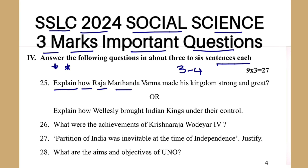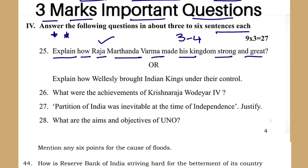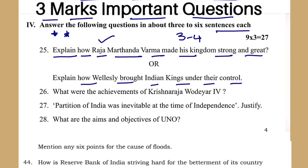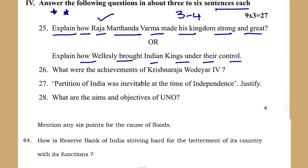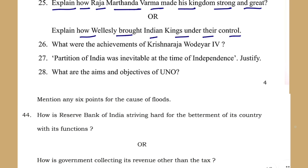Explain how Raja Marthanda Verma made his kingdom strong and great — very important. This is from the first lesson, Advent of Europeans to India. Explain how Wellesley brought Indian kings under their control — again very important. This covers the impact and extension of British rule in India.